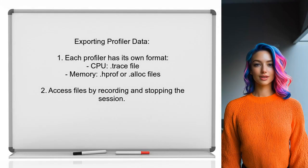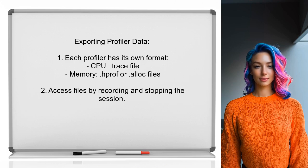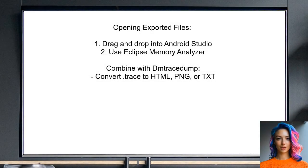Another user points out that exporting Android Studio Profiler data to a text file isn't straightforward — each profiler has its own export format. For example, the CPU profiler exports to a .trace file, while the memory profiler exports to .prof or .alloc files. You can access these files by recording your session and stopping it afterward. Once exported, you can open these files by dragging them into Android Studio or using tools like the Eclipse Memory Analyzer. You can also combine the .trace file with DM Tracedump to convert it into formats like HTML, PNG, or TXT.